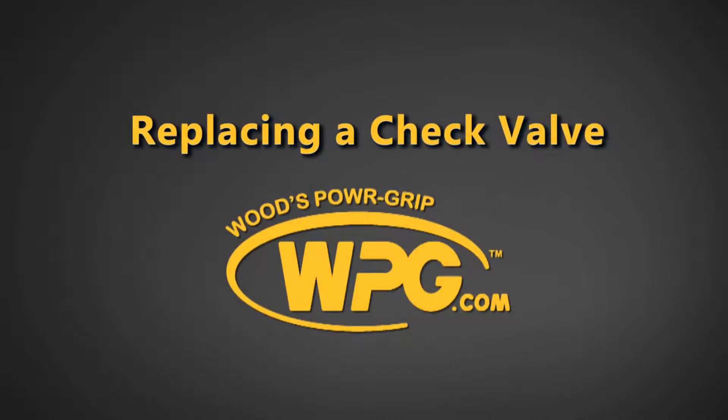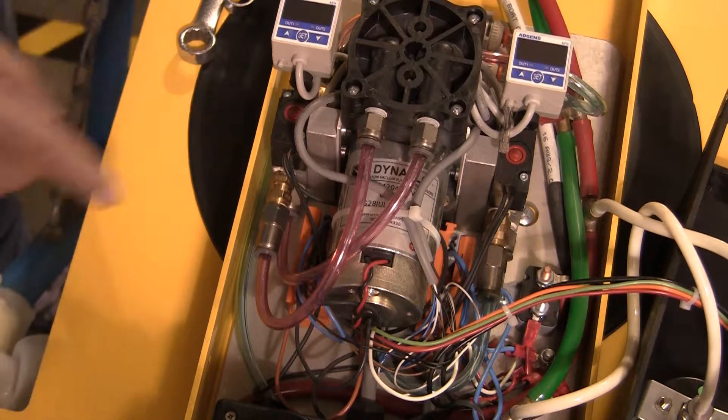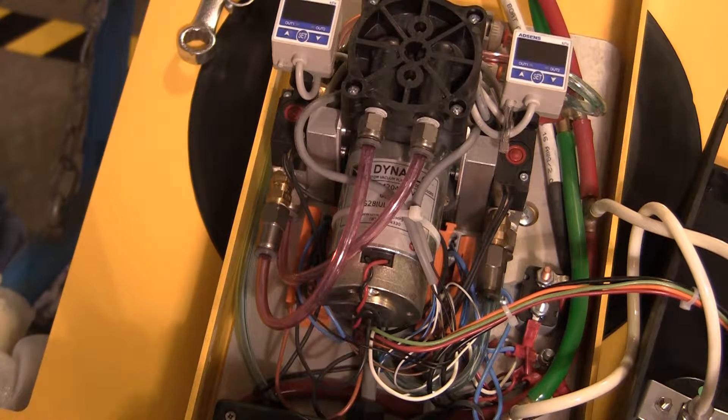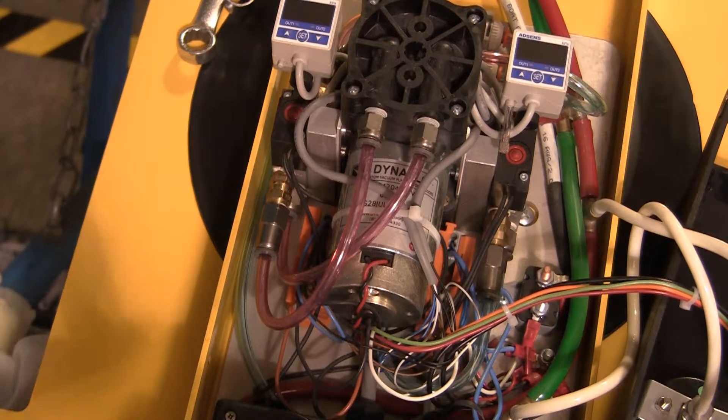Replacing a check valve. The check valve is one of the components on a vacuum lifter that can often be the cause of a vacuum leak. Check valves may be located in different places depending on the make and model of your lifter.